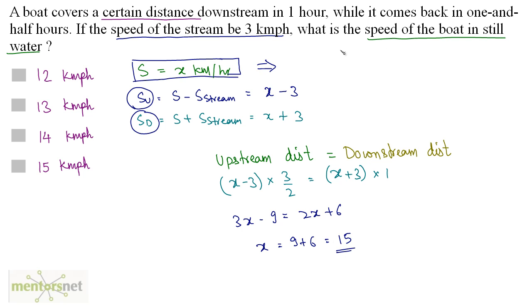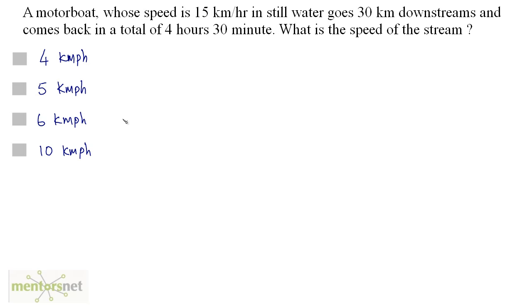So the speed of the boat in still water is 15 kilometers per hour — that's option D. Next problem: a motor boat whose speed is 15 kilometers per hour in still water goes 30 kilometers downstream and comes back in a total of 4 hours 30 minutes. What is the speed of the stream?